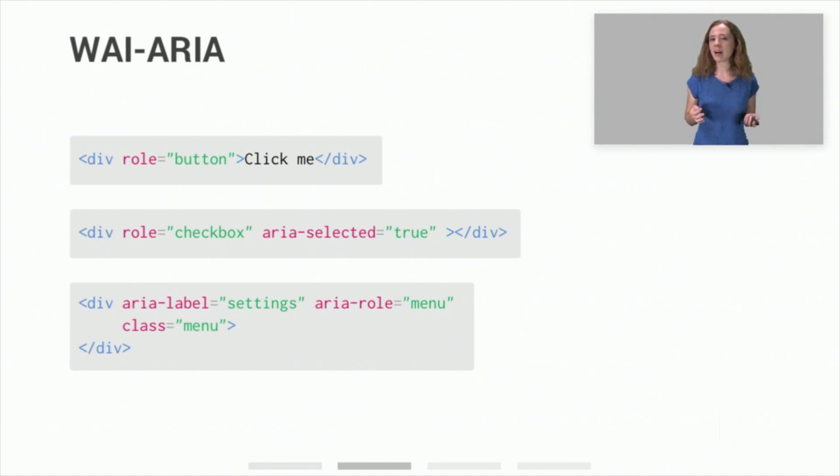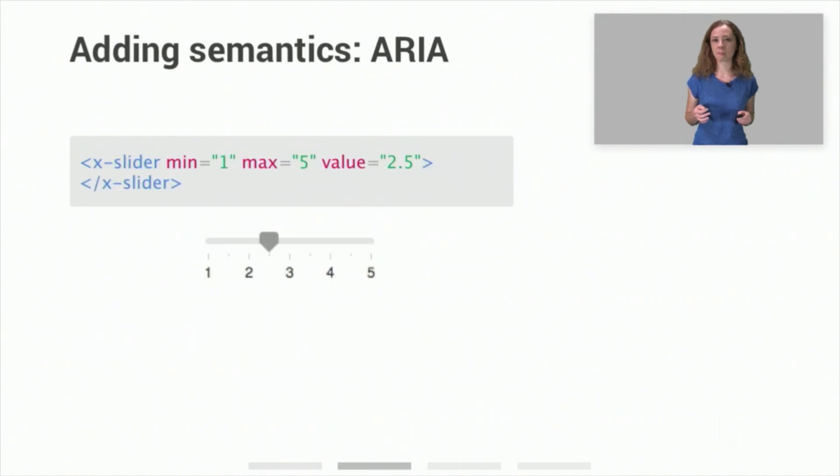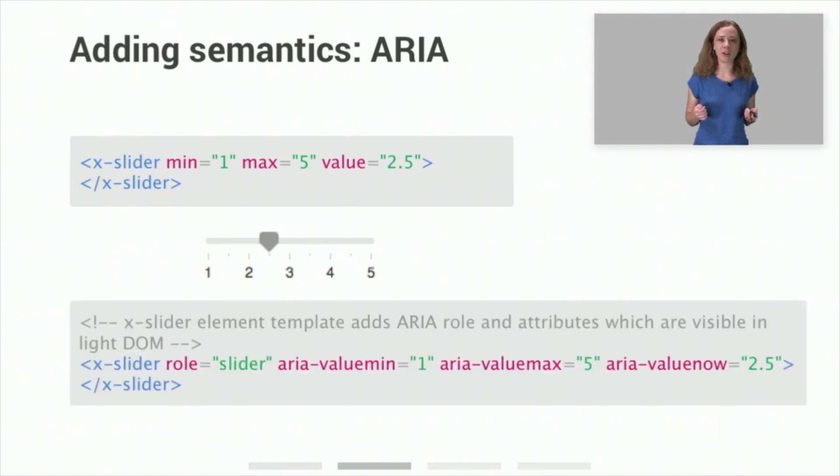So we can use ARIA to add the semantic information we want to our custom elements. This is a custom slider element, which you can visually see has a minimum value of 1, a maximum value of 5, and a current value of 2.5. Until we add the relevant ARIA attributes, this element doesn't communicate any of this to assistive technology. We can add ARIA value attributes to tell assistive technology about the value of this element. Here we've added the attributes for role and current minimum and maximum values.